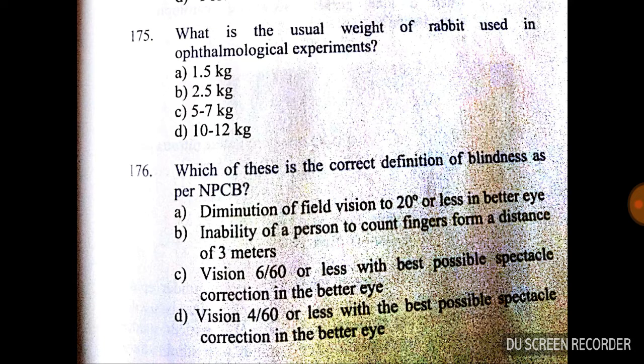Question number 176: which of the following is the correct definition of blindness as per NPCB? The answer is B — inability of a person to count fingers from a distance of three meters.